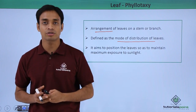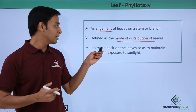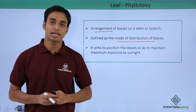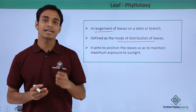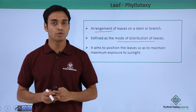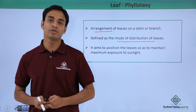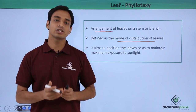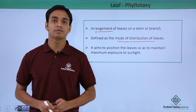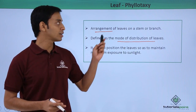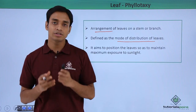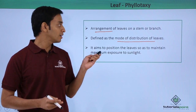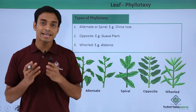Phyllotaxy aims to position the leaves such that they can receive the maximum sunlight. We know that sunlight is necessary for the process of photosynthesis, which uses chlorophyll present in the leaves. So leaves need to be exposed or positioned in such a way that they can receive maximum sunlight. Hence phyllotaxy and the mode of arrangement of leaves on the branches or the stem is very important.